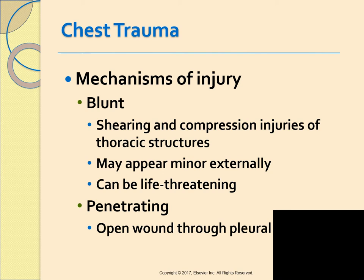They break the mechanism of injuries that cause chest trauma into two categories. The first category is called blunt trauma, meaning the chest has been struck with some sort of object and the impact causes a shearing and compression of everything inside the thoracic cavity. The external injury may look minor but internally the organs can have severe injuries. Rib and sternal fractures can lacerate the lung tissue, and if there's a high velocity impact like in a car crash, shearing forces can actually rupture the aorta.